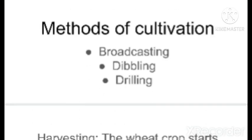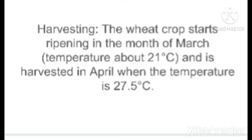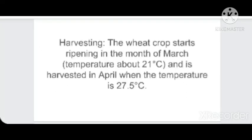For methods of cultivation, wheat follows broadcasting, dribbling, and drilling methods — already discussed in the rice cultivation chapter. Harvesting takes place by the end of March, when the temperature rises to about 20 degrees Celsius and abundant sunshine is available. It can be harvested by the beginning of April; the golden brittle color indicates the harvesting time. The average temperature for the harvesting period is 25 degrees Celsius, going up to 27.5 degrees Celsius, but above that is harmful for the crop.